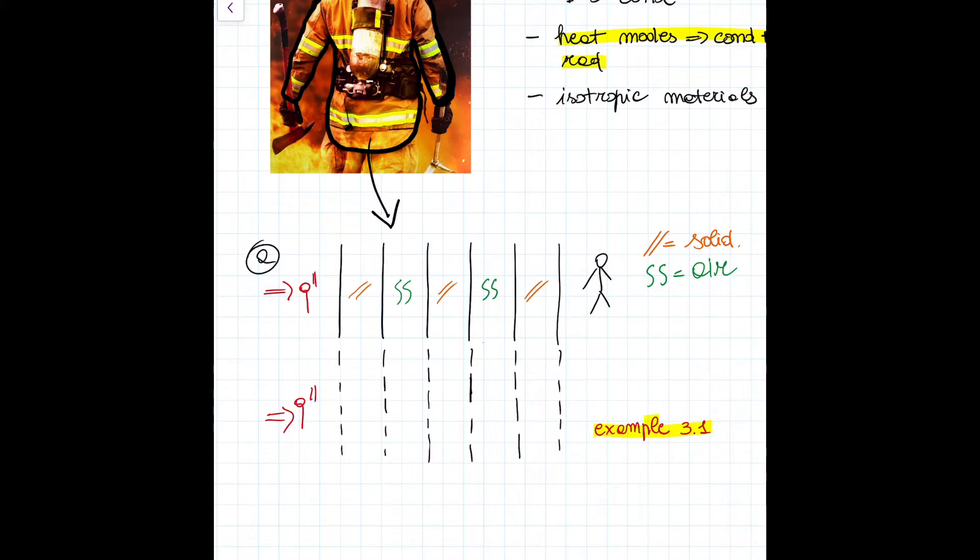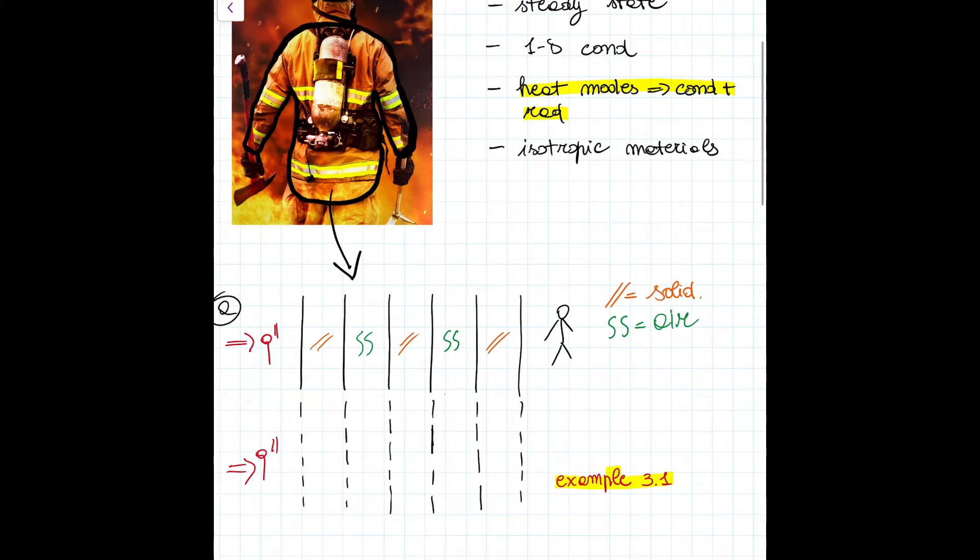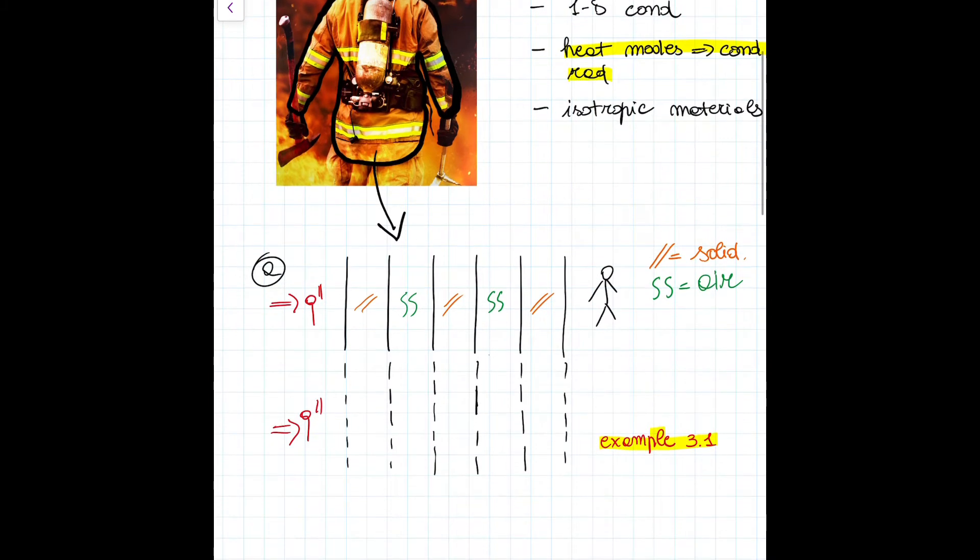Task A consists of visualizing the scenario and transforming the system described in the exercise into an equivalent thermal circuit. Before doing so, though, it is essential to remember that the exercise asks to account for the thermal resistances of both conduction and radiation. Here we go again, that's why I highlighted the assumption I listed before.